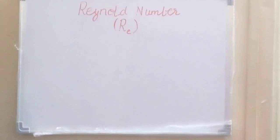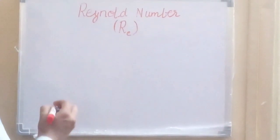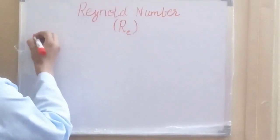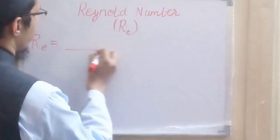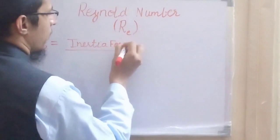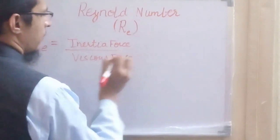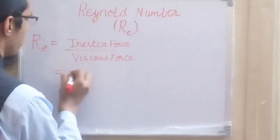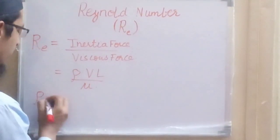Hello and welcome to my YouTube channel. In this video we will be discussing the Reynolds number, the most important dimensionless number in fluid mechanics and water resource engineering. Reynolds number is basically a dimensionless number represented by the ratio of inertia force and viscous force. Mathematically it can be represented as rho·v·l divided by mu, where rho is the density of fluid.